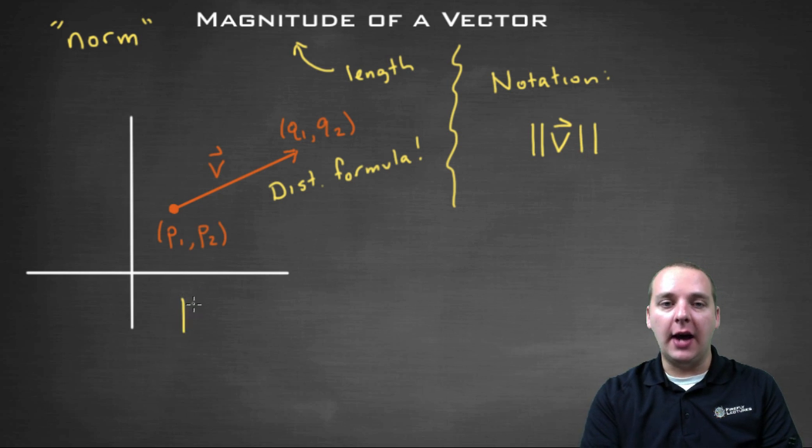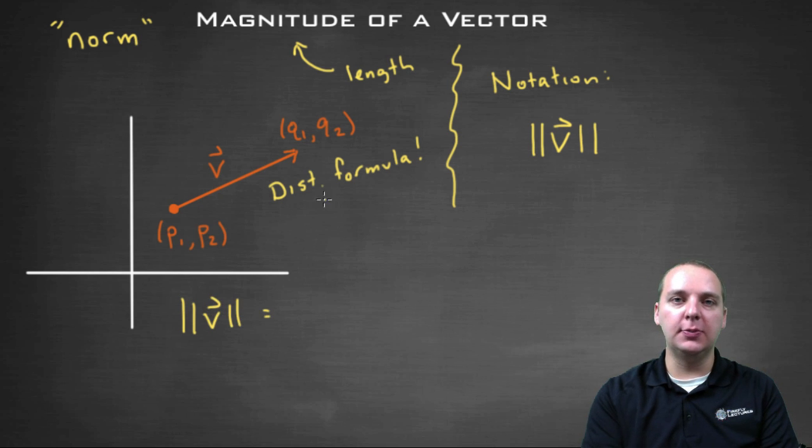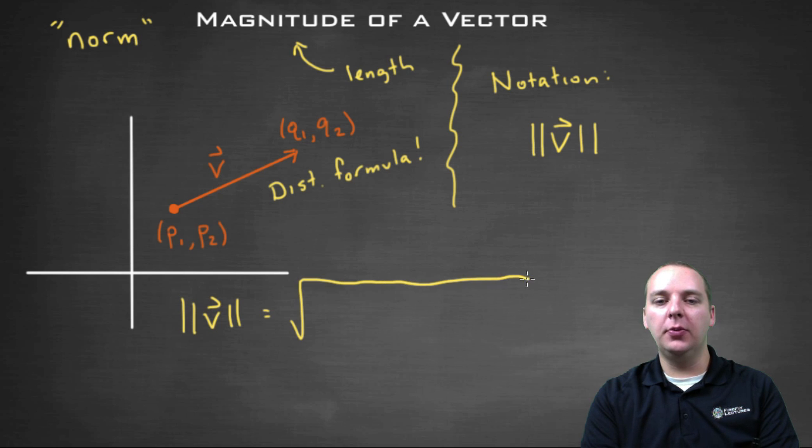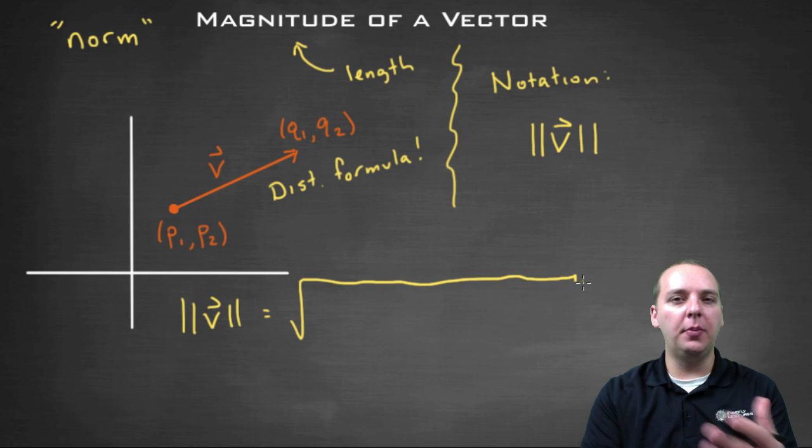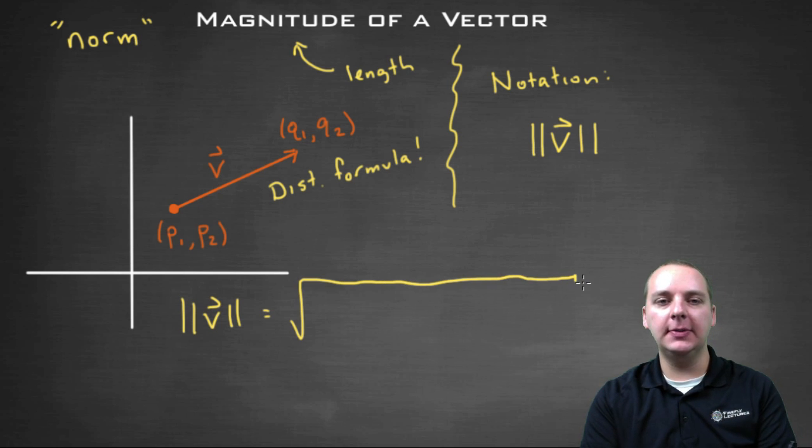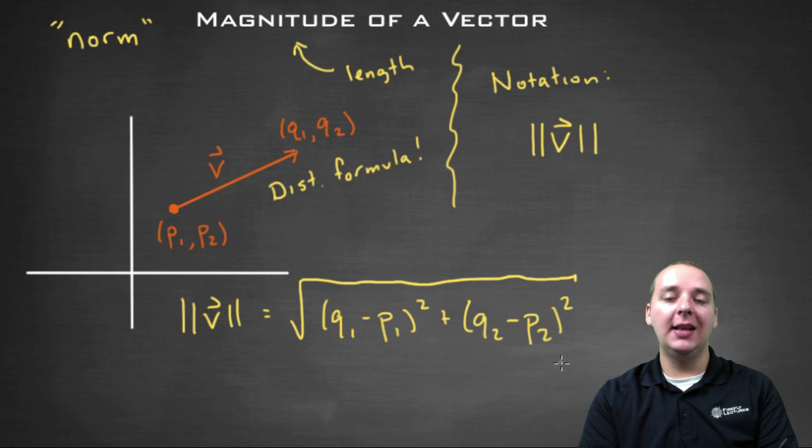So now, how do you actually find the magnitude of the vector? Well again, it goes back to this distance formula. So we'll take a big square root, and I'm assuming we remember a lot of this from our old algebra days. We'll take q1 minus p1 squared, plus q2 minus p2 squared. And this is nothing more than the distance formula you learned a long time ago from one point to another.